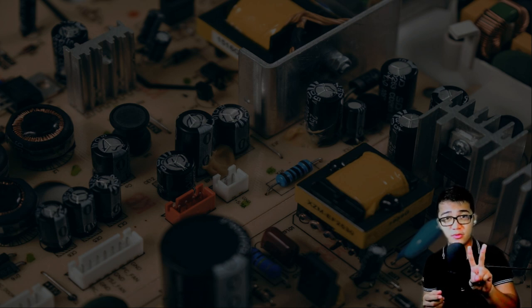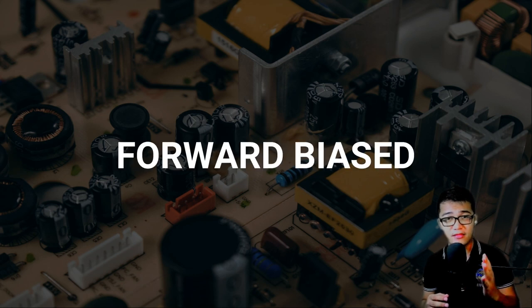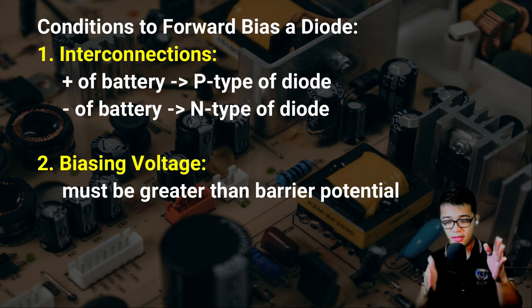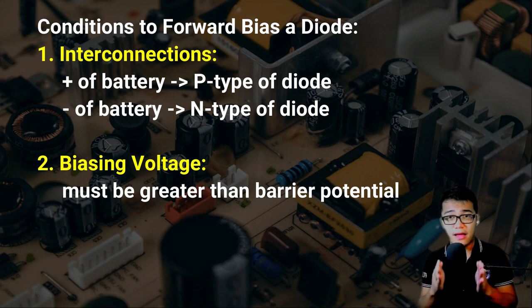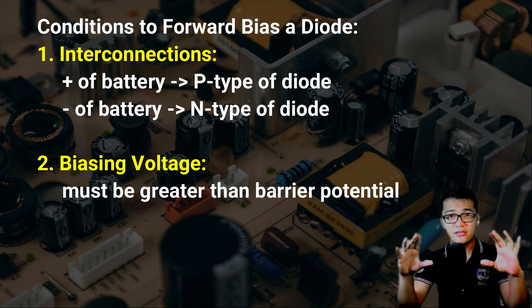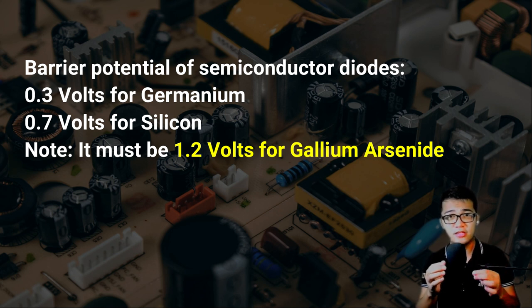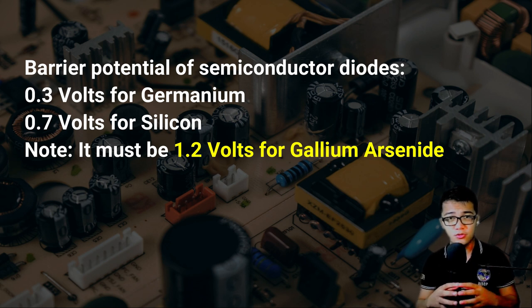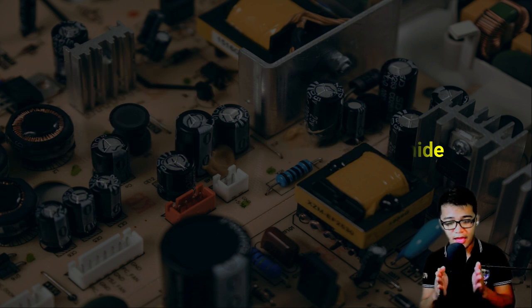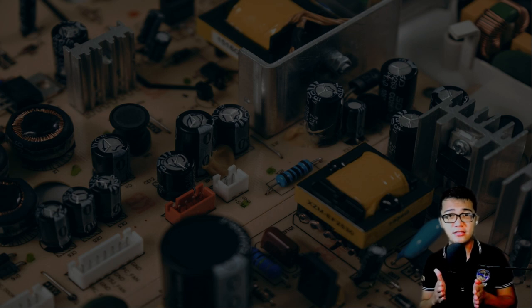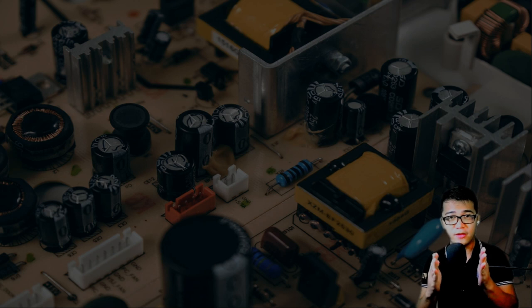There are two conditions that must be met for a diode to be forward biased. First, the interconnection must be positive terminal to P-type and negative terminal to N-type. Second, the biasing voltage must exceed the barrier potential. This diode has a particular barrier potential — if it is made of germanium, it is typically 0.3 volts; if it is made of silicon, it is 0.7 volts; and if it is made of gallium arsenide, it is 1.3 volts. The battery supplied to the diode must exceed that barrier potential in order to forward bias the diode.